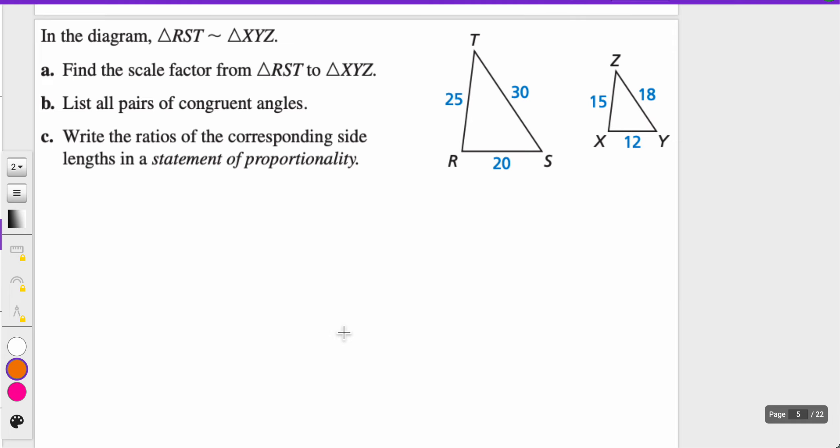So this one we're going to try together. In the diagram, RST is similar to XYZ. Find the scale factor of RST to XYZ. The first thing we can do is take a side from the smaller triangle and correspond it with the old side. So 12 over 20, both match, then reduce those by four to get three-fifths. My scale factor is three-fifths.